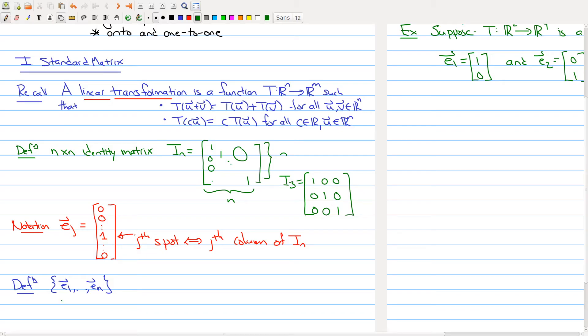Once you fix an n, you get n of these vectors, and these are called together the standard basis of Rⁿ. So e₁ through eₙ is called the standard basis of Rⁿ, and they will appear numerous times in this course.